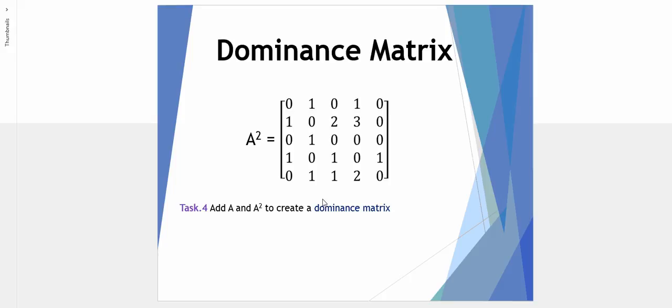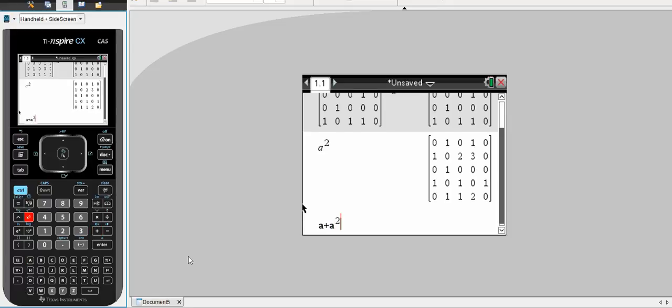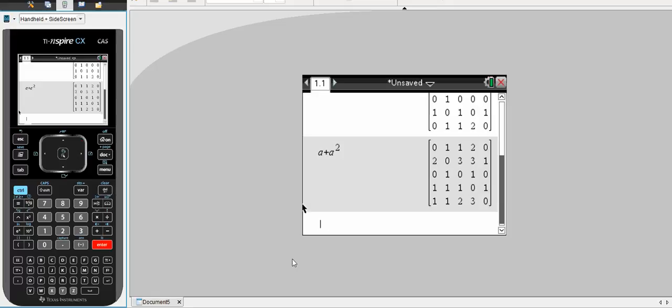Next we need to add A and A squared together to create what we call a dominance matrix. So using the calculator, we've now defined A already, so we can have A plus A to the power of 2. And here is our dominance matrix. This is the matrix of A plus A squared.